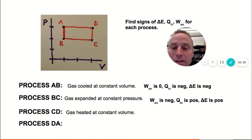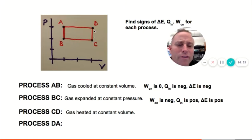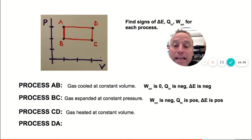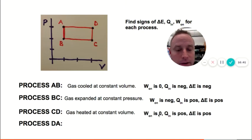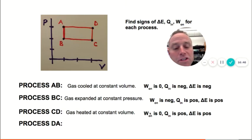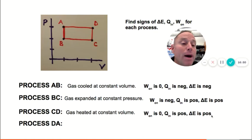C to D: at constant volume the pressure grew — apparently somebody's holding a flame under it again. The gas is being heated but the volume stays the same. No work is done since volume is constant. The heat flow in is positive. So delta E equals work on plus Q in, which is zero plus positive, giving a positive delta E.